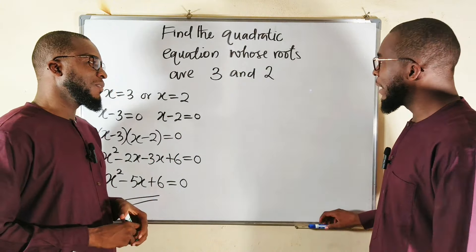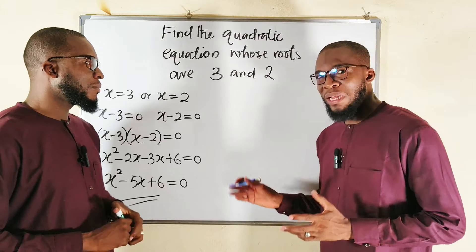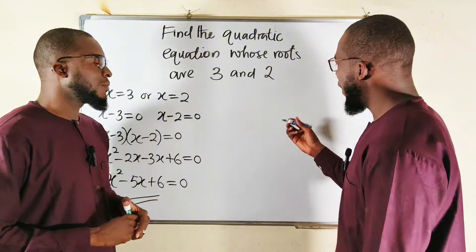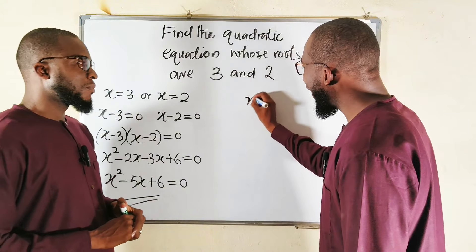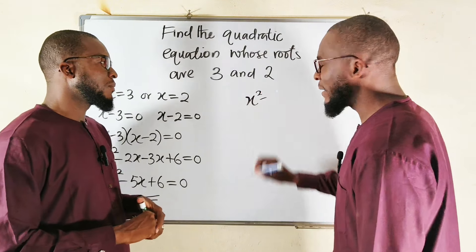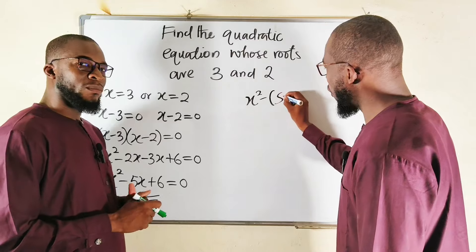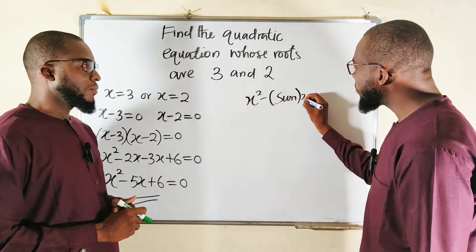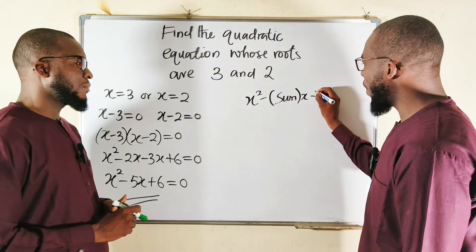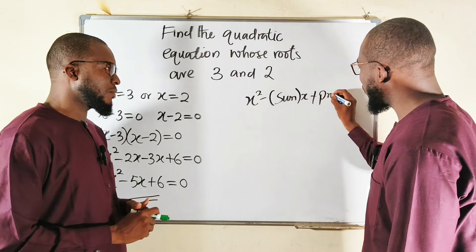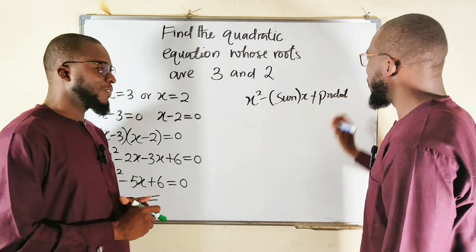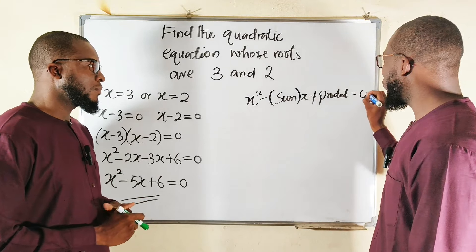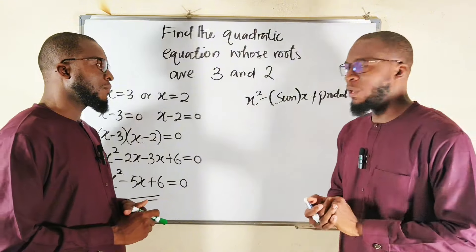Thank you very much. To solve this problem easier and faster, we are going to apply the general formula for doing that. And the formula is: x squared minus the sum — meaning, you should add the two roots together — then multiply by x, then add the product — meaning, you should multiply the two roots together — and set everything equal to 0. And you are good to go.